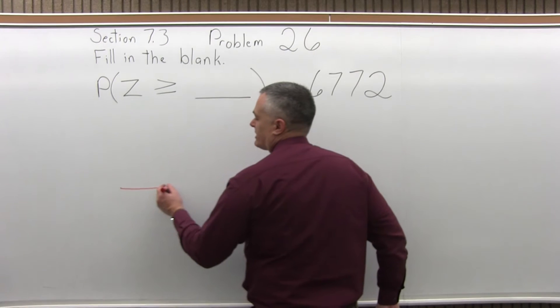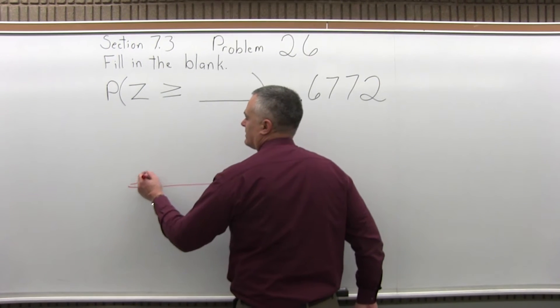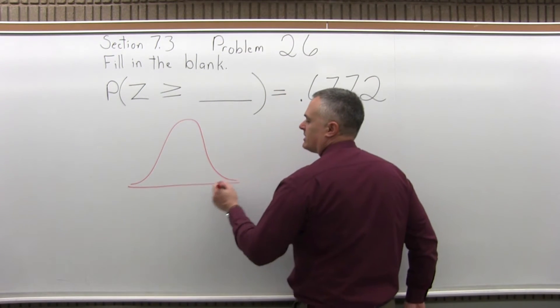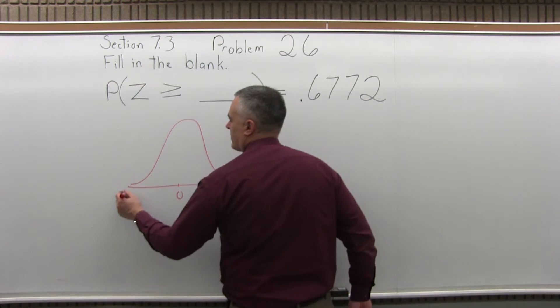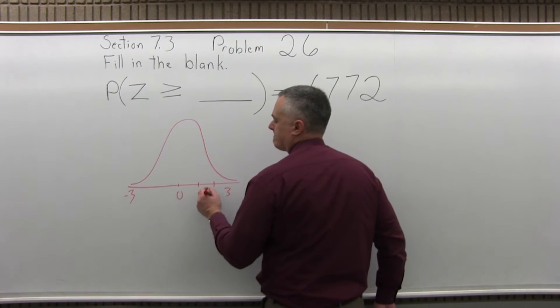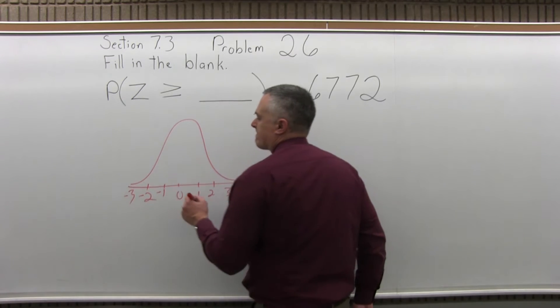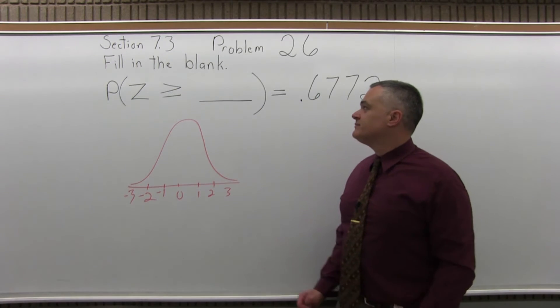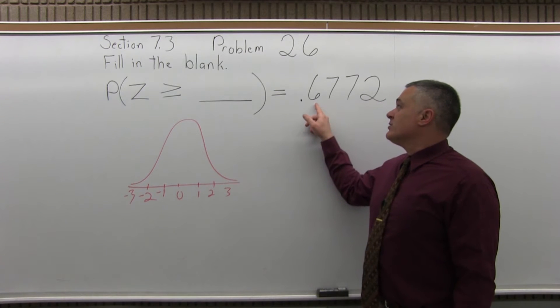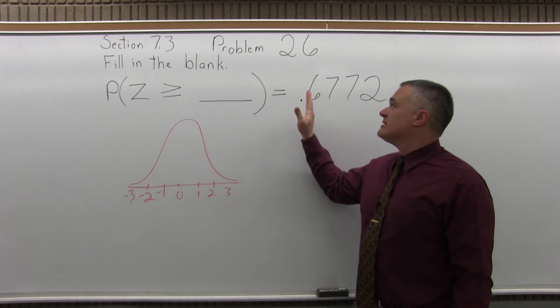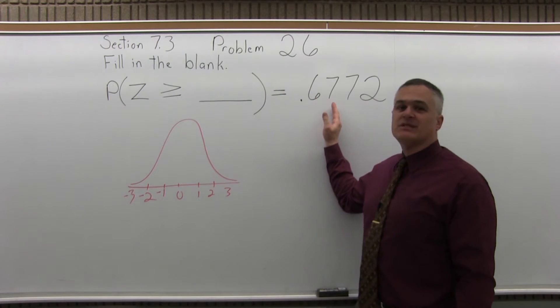Let's visually take a look at what we're trying to find. We'll start with a bell curve. Now the answer we're getting, the probability that Z is greater than some value is 0.6772.